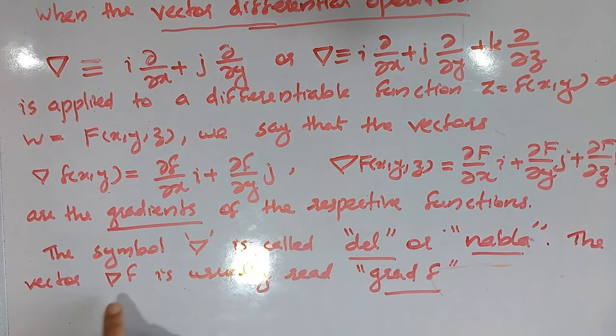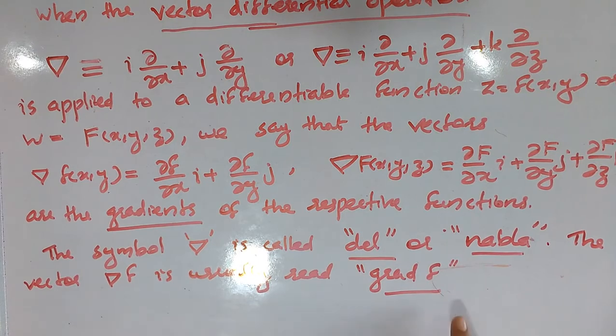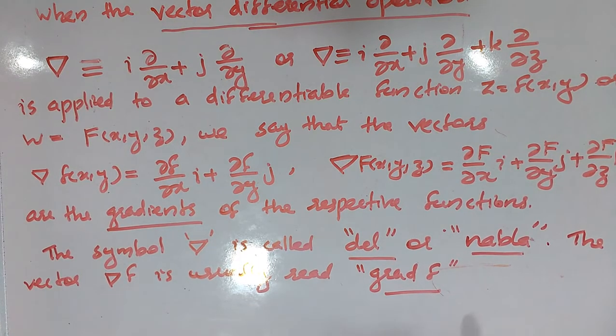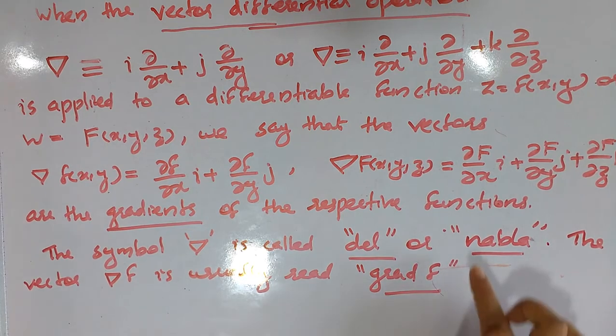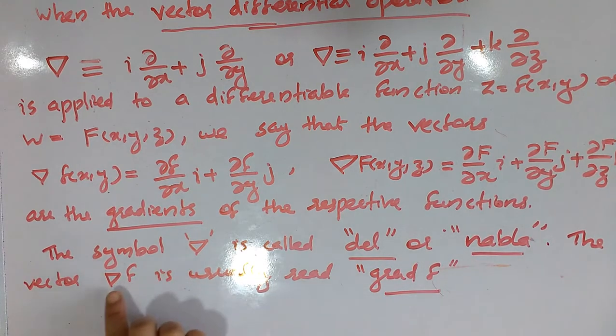The vector del f is usually written as grad f. Gradient is shortened to grad f. That's why I will write del f.